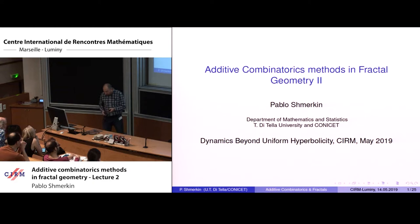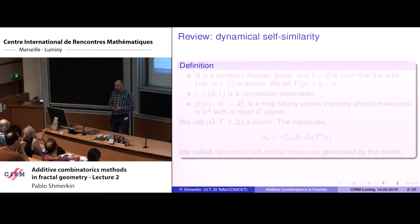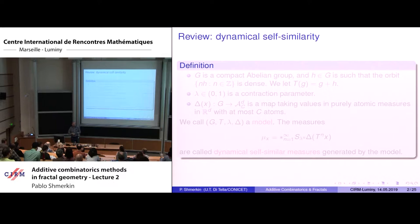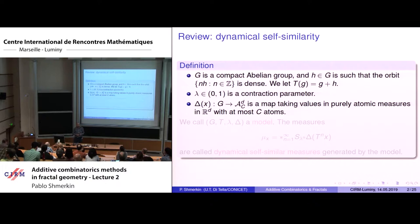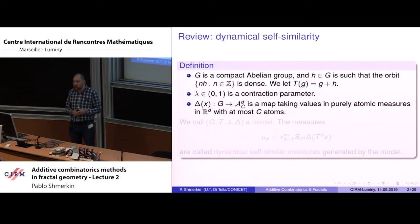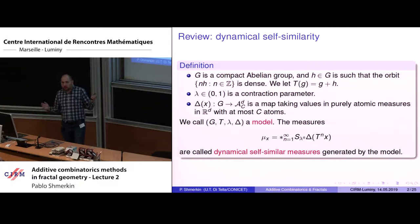A review of the definition of dynamical self-similarity: it is a generalization of self-similarity where what happens at each scale is driven by a dynamical system. The dynamical system is always going to be a transitive translation on a compact abelian group G. We have a contraction parameter lambda, and a map that assigns to each point in the group a purely atomic measure with a uniformly bounded number of atoms — at most C atoms for every element of the group. With all this information we build these dynamical self-similar measures.